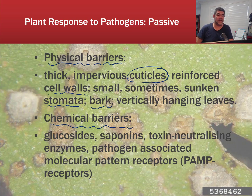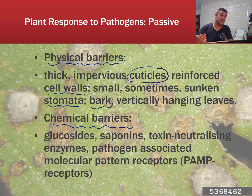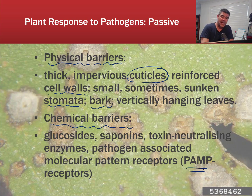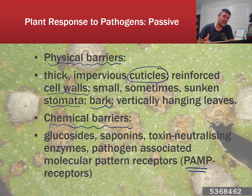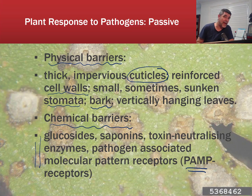But if the physical barriers don't work, what are some other things that plants can do? They produce a number of different types of chemicals — some of which we actually use ourselves. These include glucosides, saponins, toxin-neutralizing enzymes, and pathogen-associated molecular pattern receptors, known as PAMPs. These are part of when the system is starting to move from a passive system towards a more active system — one that actually identifies or recognizes particular pathogens in order to try and deal with them. Most of the time, these secretions are simply designed to minimize exposure to pathogens.